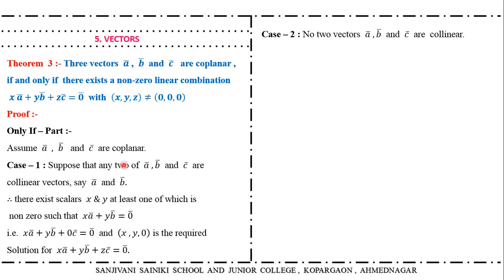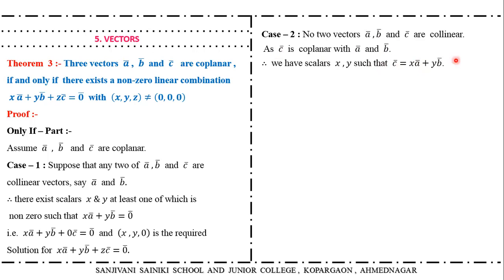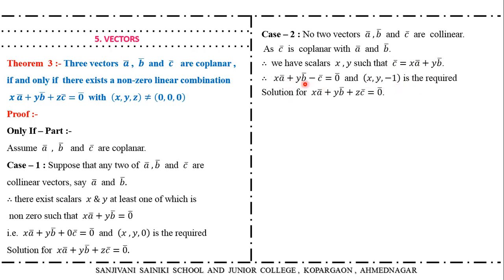Case two: suppose no two vectors among A bar, B bar, and C bar are collinear. Since C bar is coplanar with A bar and B bar, we can express C bar as a linear combination: C bar equals X·A bar plus Y·B bar. Therefore X·A bar plus Y·B bar minus C bar equals zero bar. So the scalars are X, Y, and minus one — in either case we can write X·A bar plus Y·B bar plus Z·C bar equals zero bar, with at least one scalar nonzero.